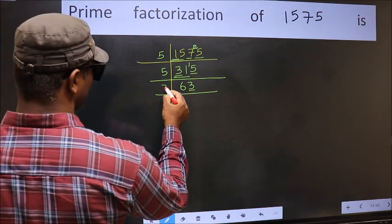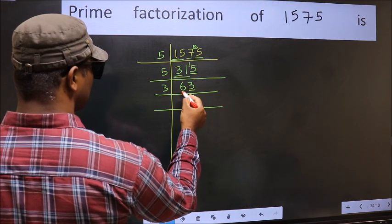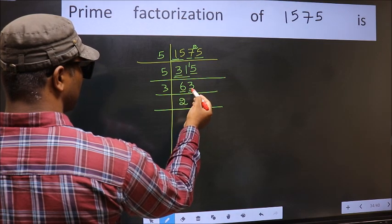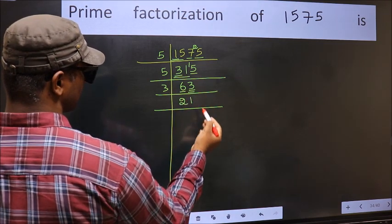So, take 3 here. First number 6, when do we get 6 in 3 table? 3 times 2, 6. The other number 3, when do we get 3 in 3 table? 3 times 1 is 3.